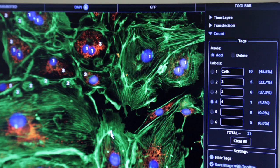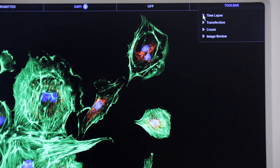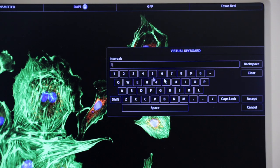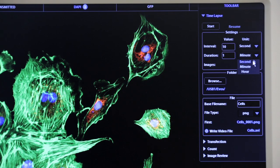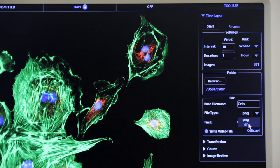Document your results by simply saving the tagged image with the count tool displaying the totals. The time lapse feature allows you to program the instrument to record a multitude of individual images over time. Simply set the interval and duration required and the EVOS FL imaging system will collect the images and create an AVI file.